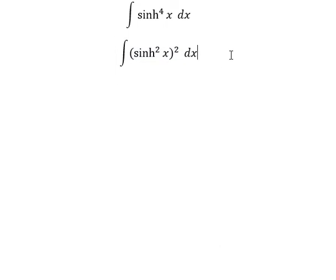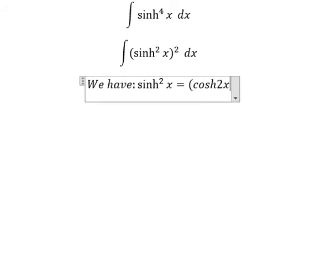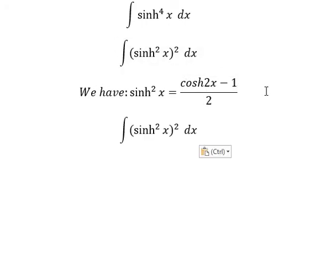Next, we have the formula here: sinh²x equals cosh2x minus 1 over 2. So I will put this one in here.